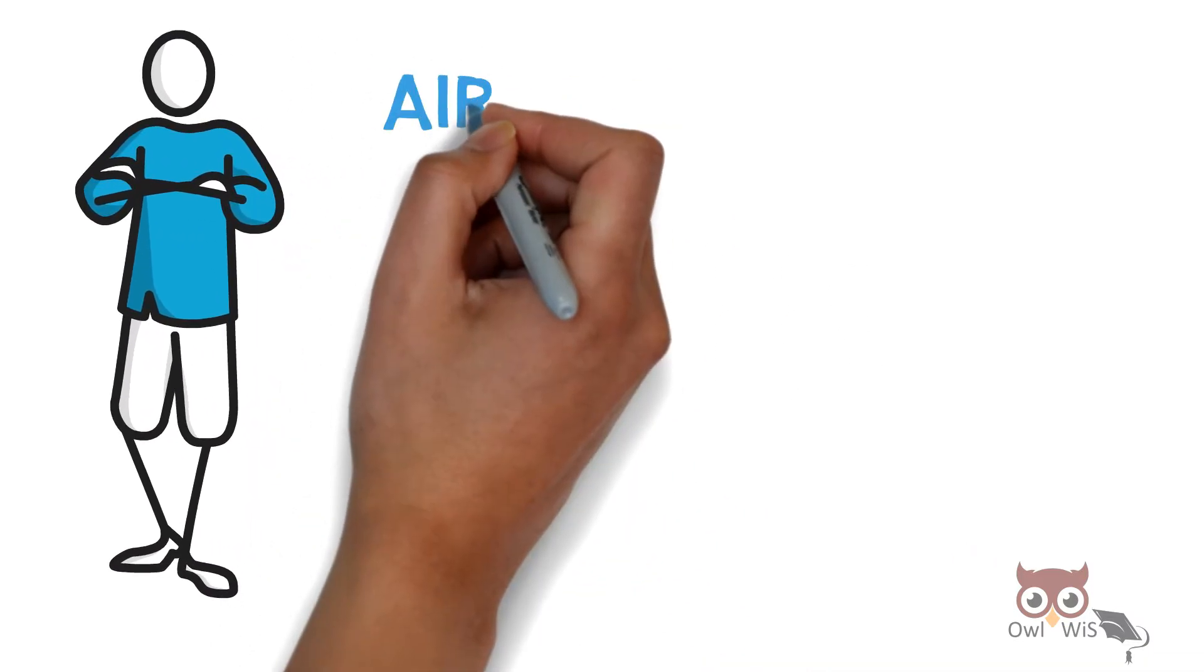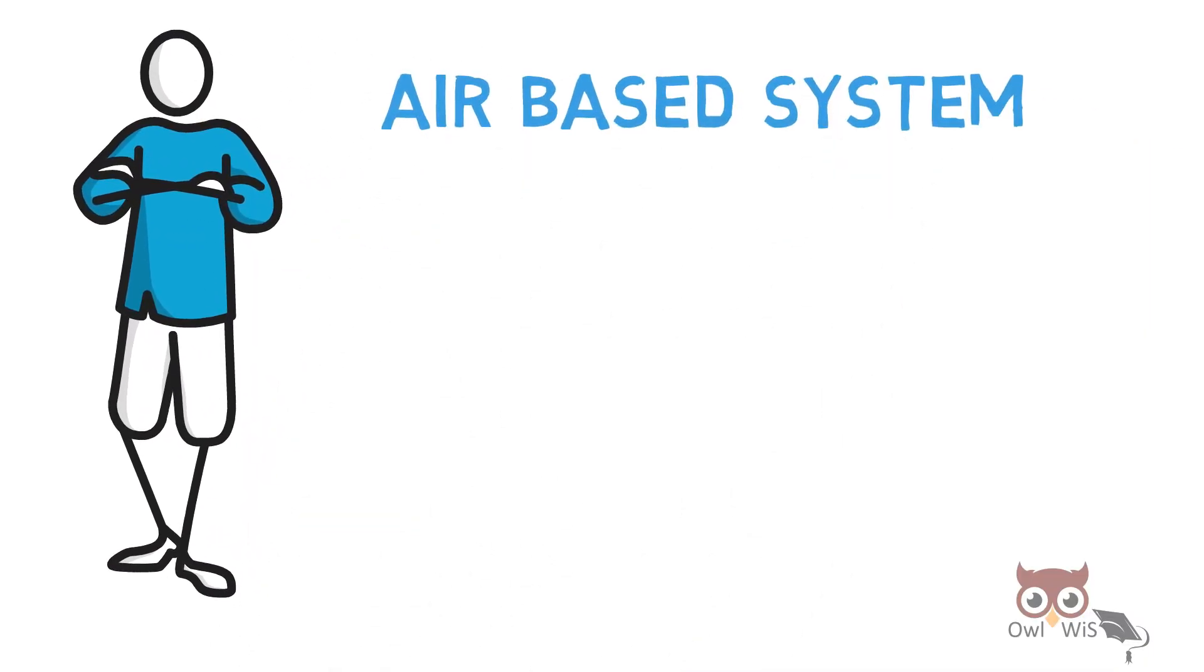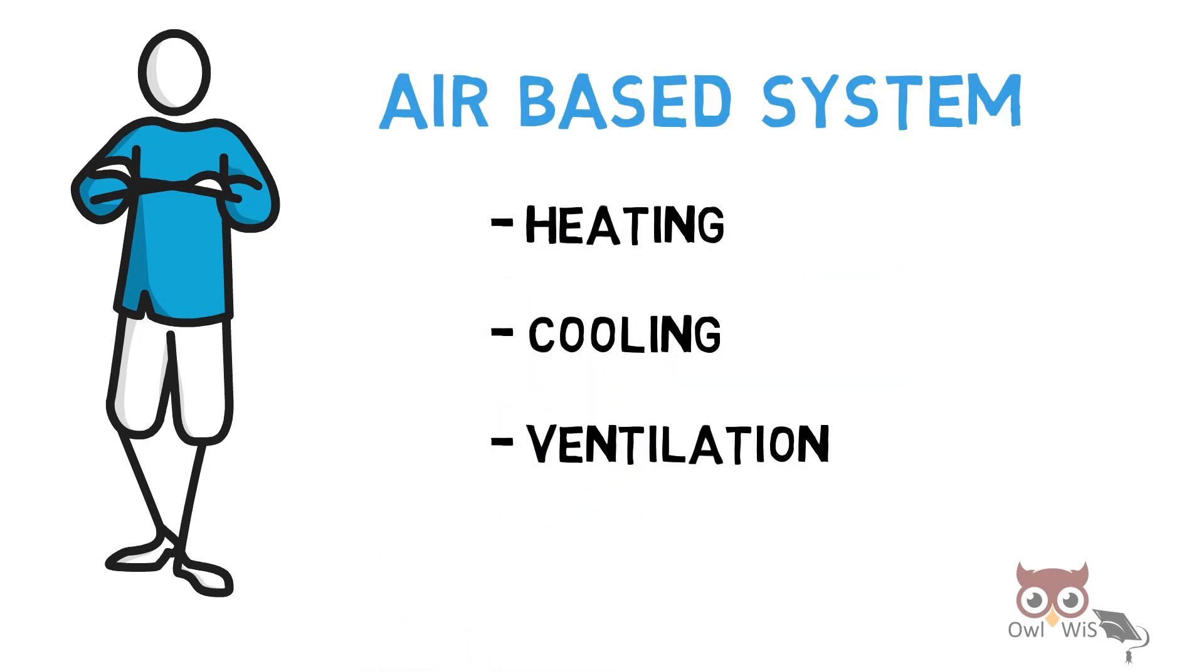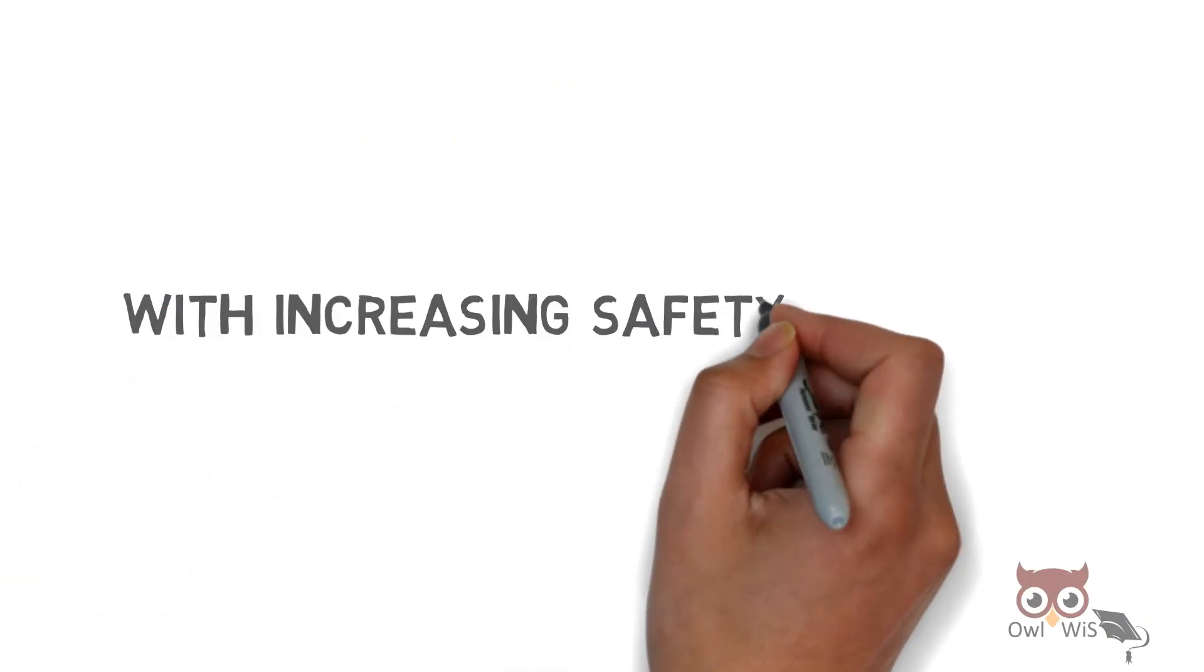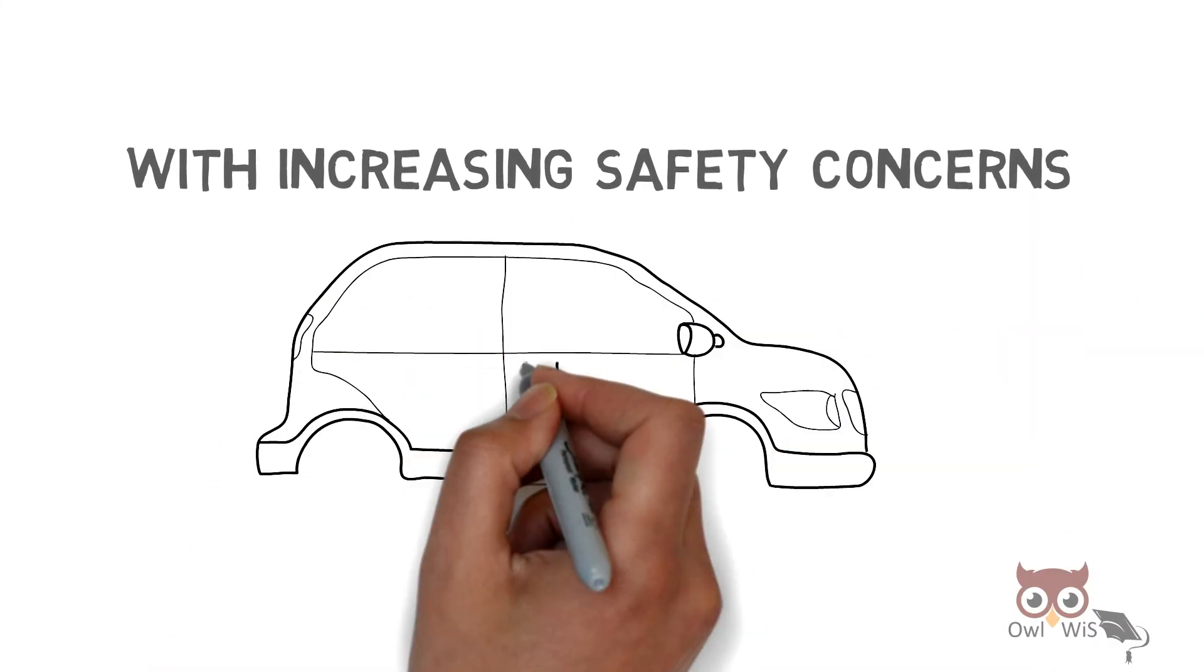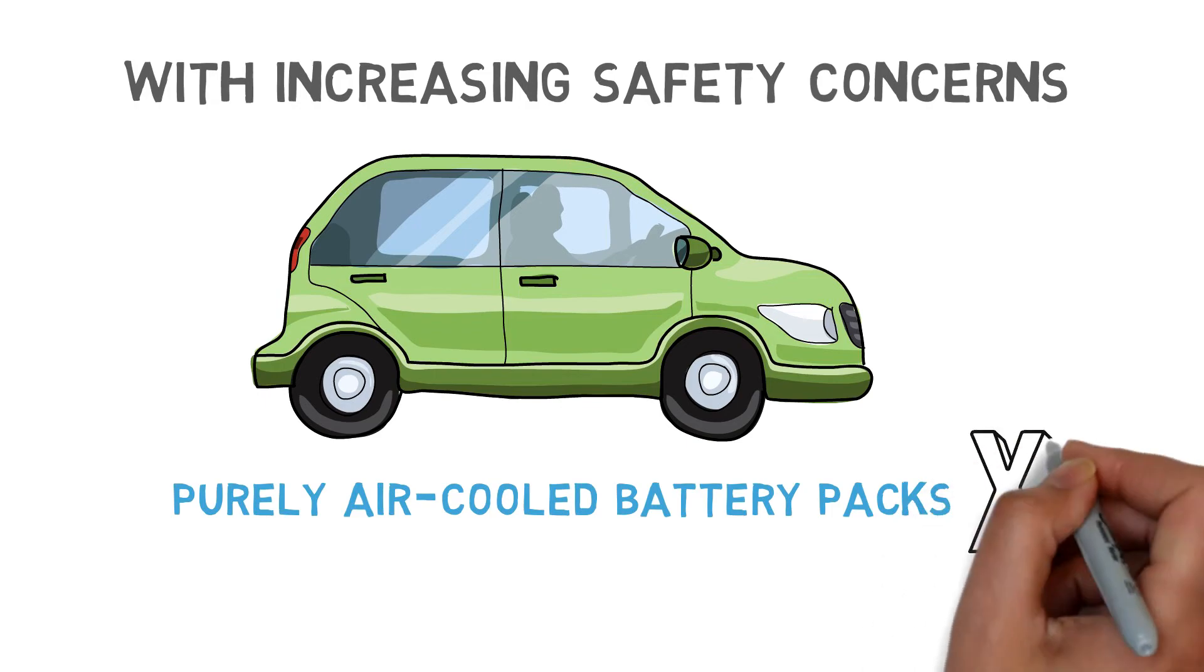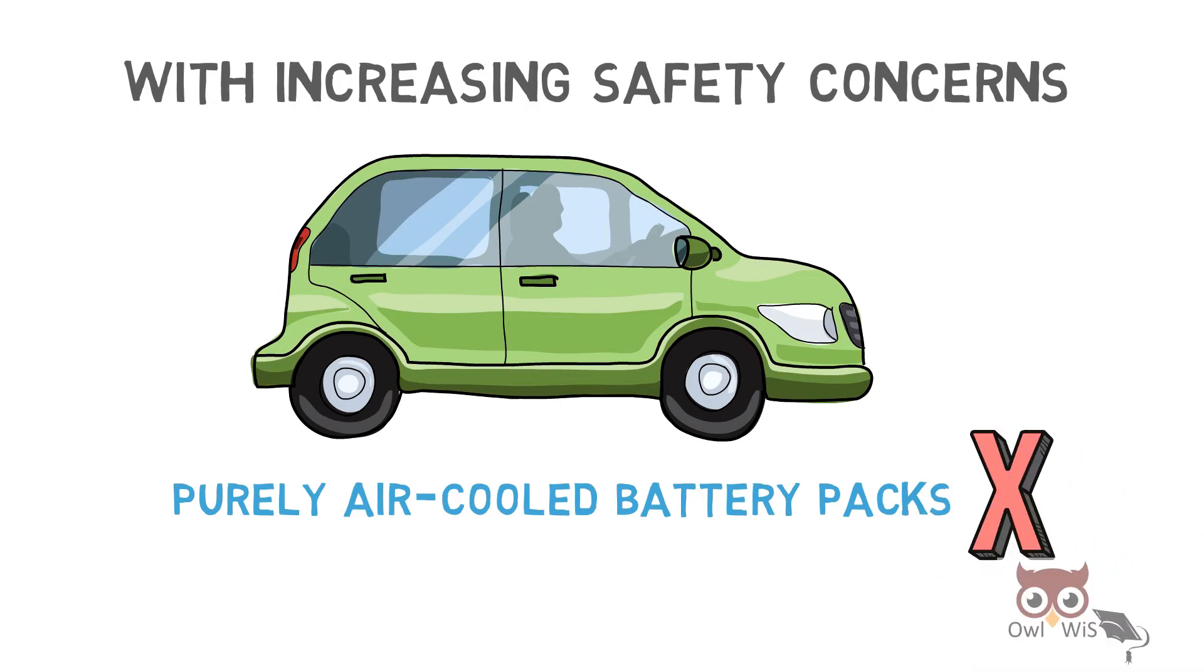So we can say that air-based systems provide both heating, cooling, as well as ventilation and there is no additional ventilator required. Also, with increasing safety concerns of electric vehicles, purely air-cooled battery packs cannot be used, especially in hot climate conditions. So, hybrid systems are used.